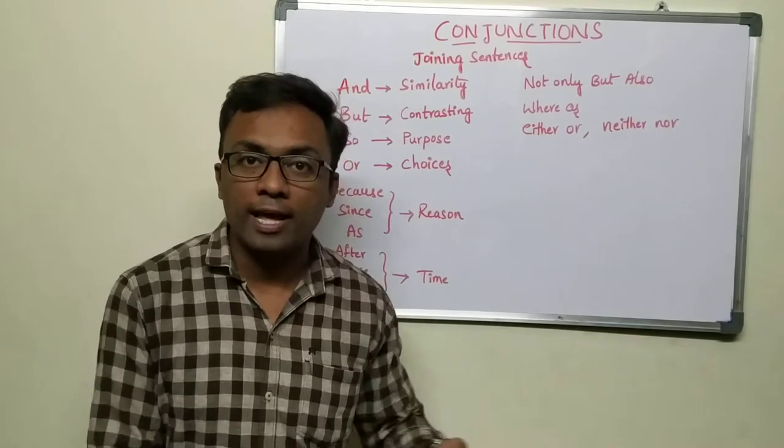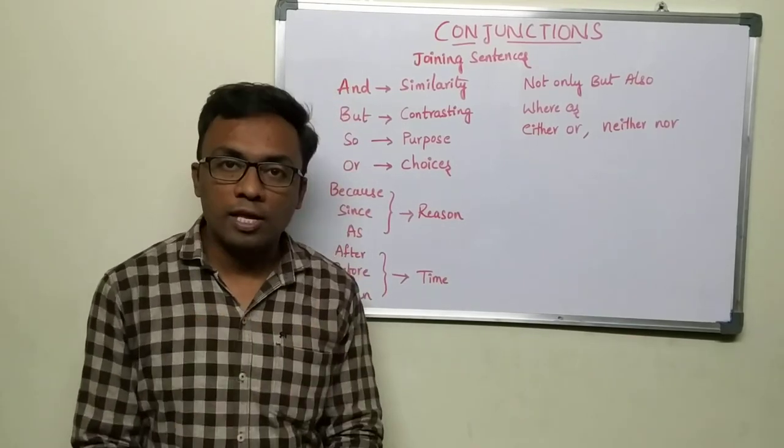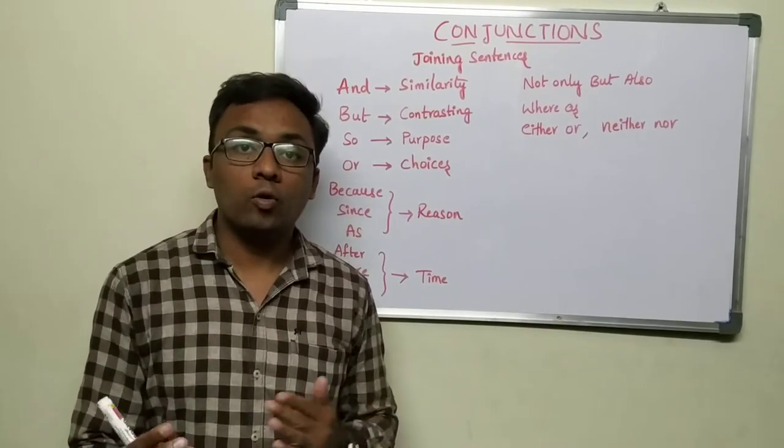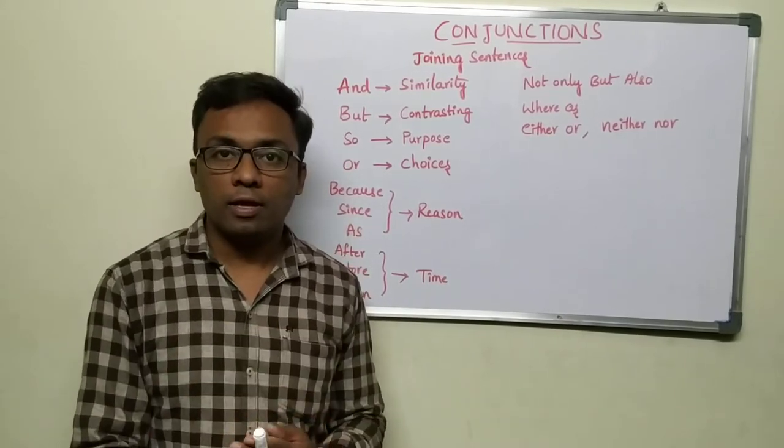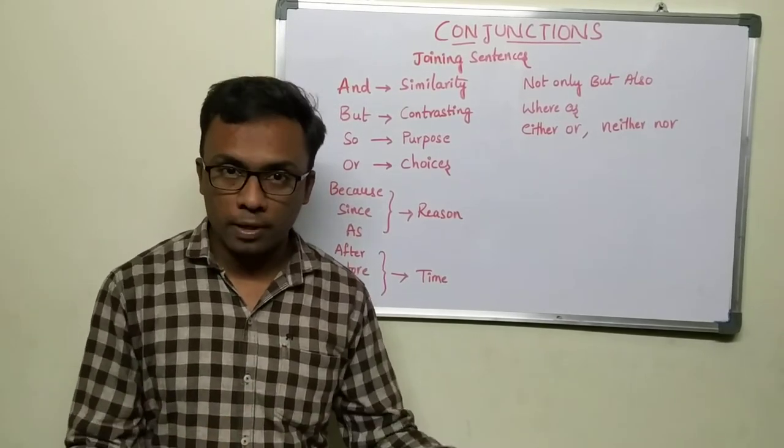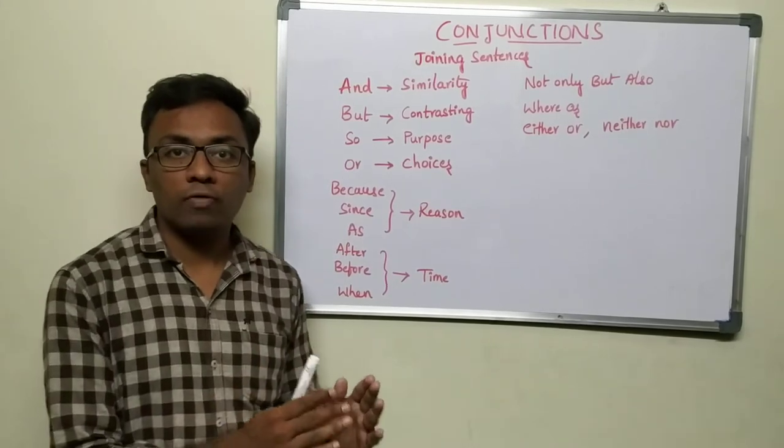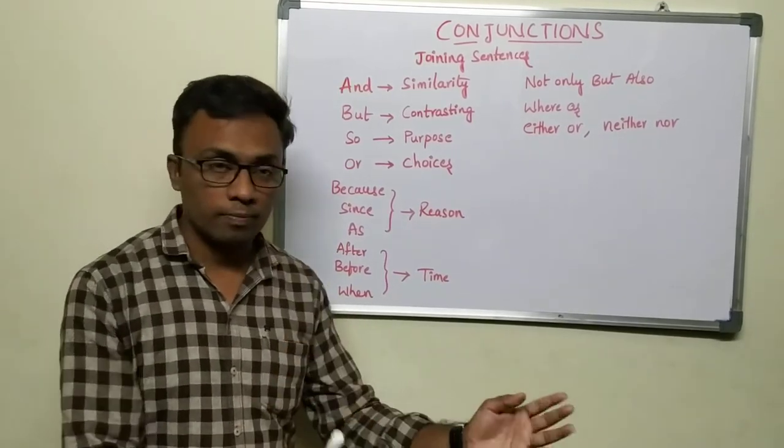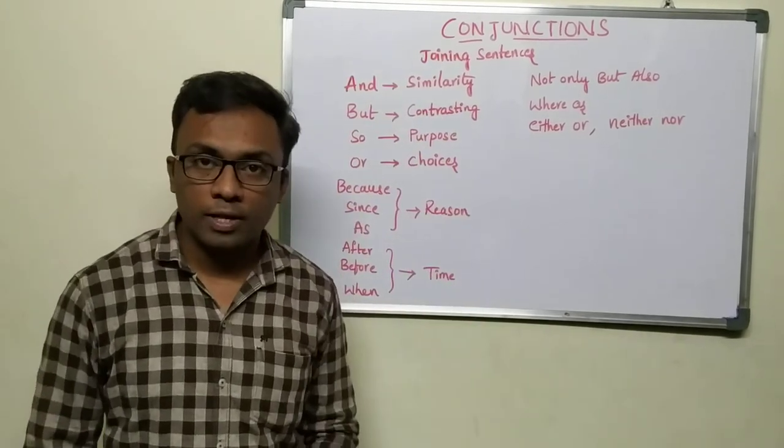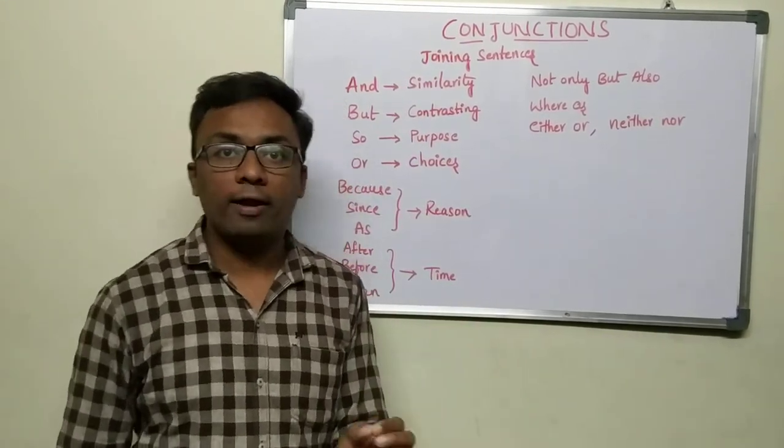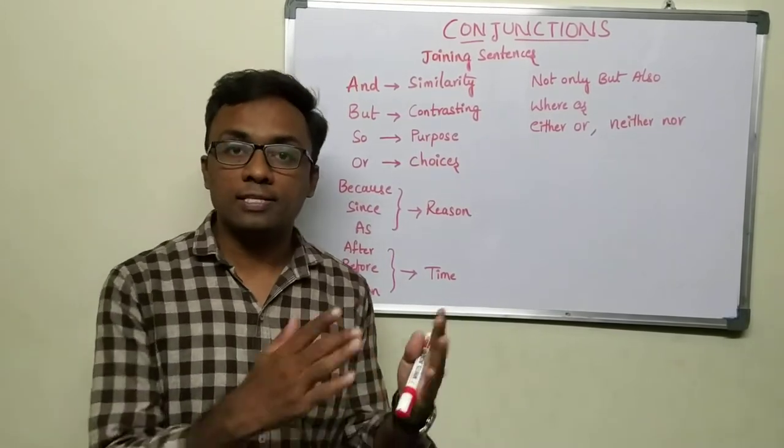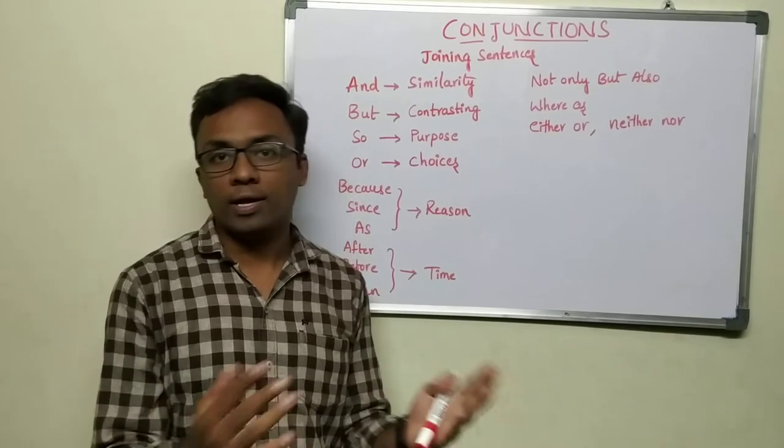Whatever word you use to join two sentences and convey meaning is a conjunction. The more conjunctions you know, the more you can shorten sentences, sound better, and be understood by people. Every conjunction has a different situation. The famous one, 'and,' joins similar things - like 'Ramu and Rakesh are classmates.' They study in one class, that's why you use 'and.'